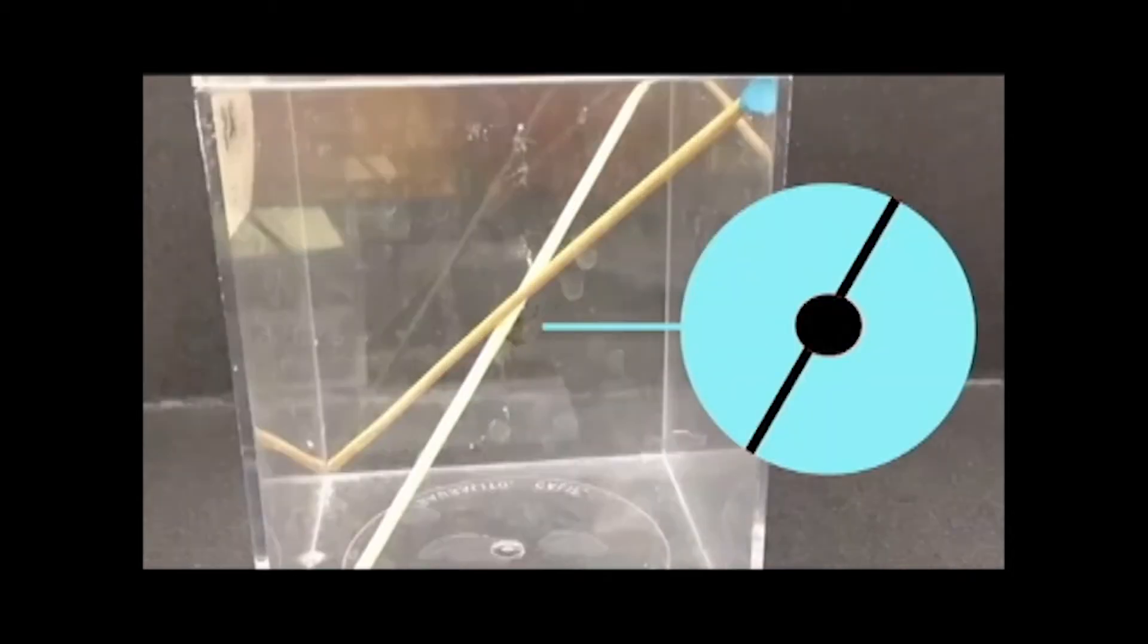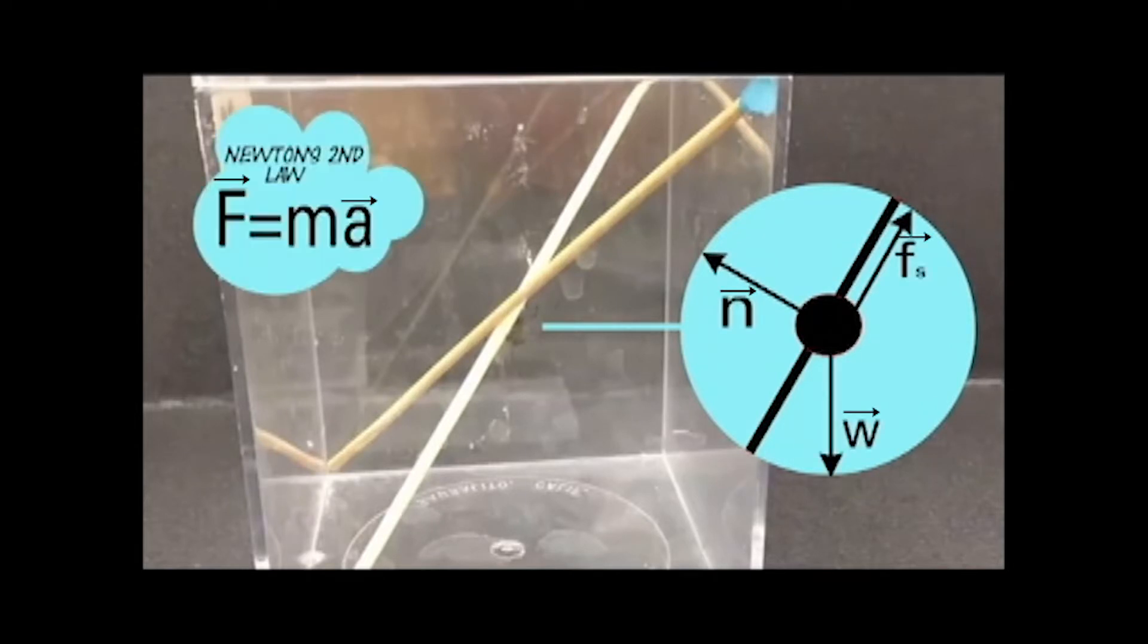Scenario 2. The spider was stationary on an inclined stick. The main forces acting on the spider were normal, static friction, and weight. Based on Newton's Second Law, it was assumed that the net forces acting on the spider were equal to zero.